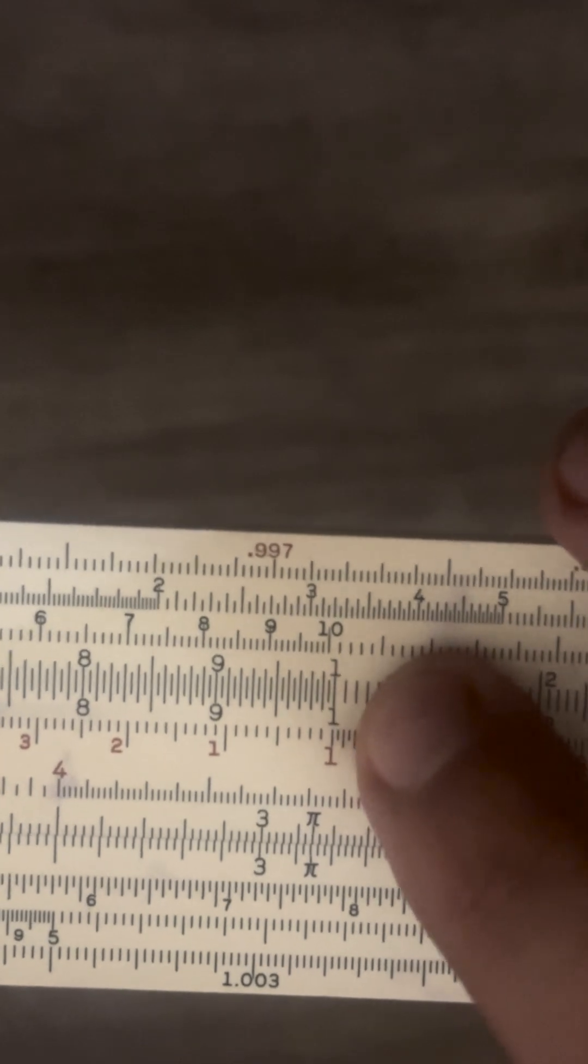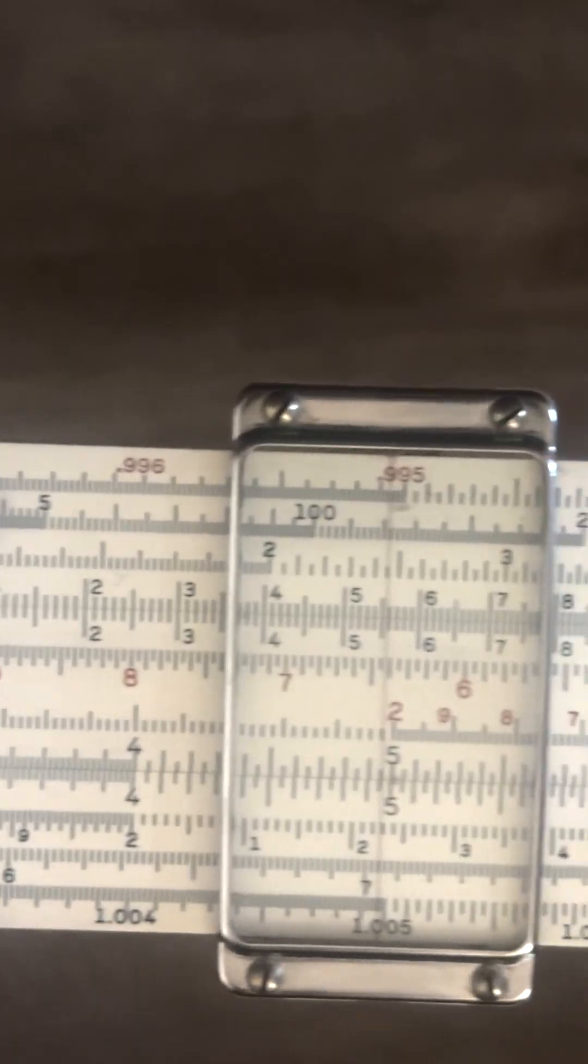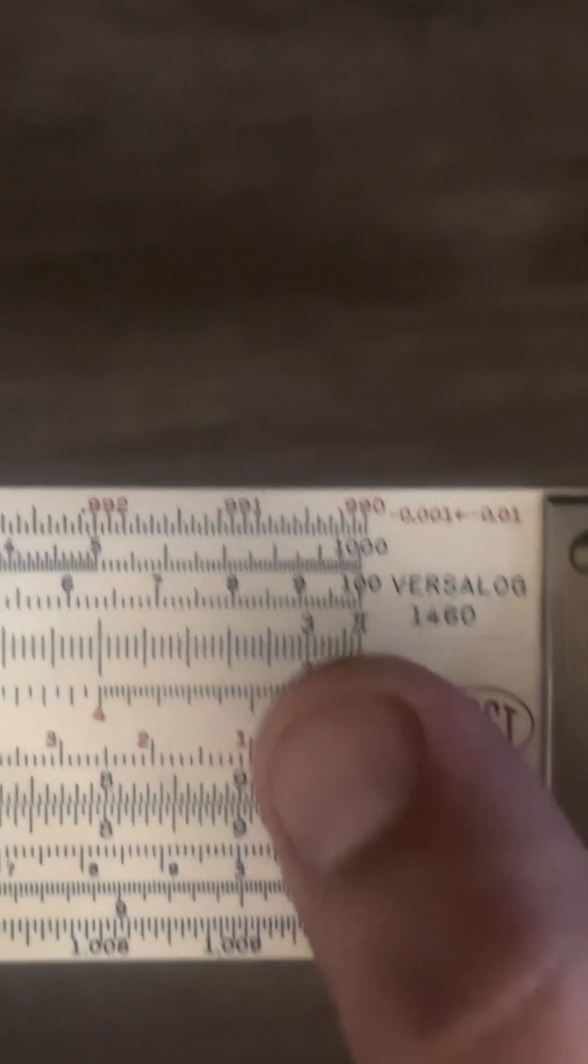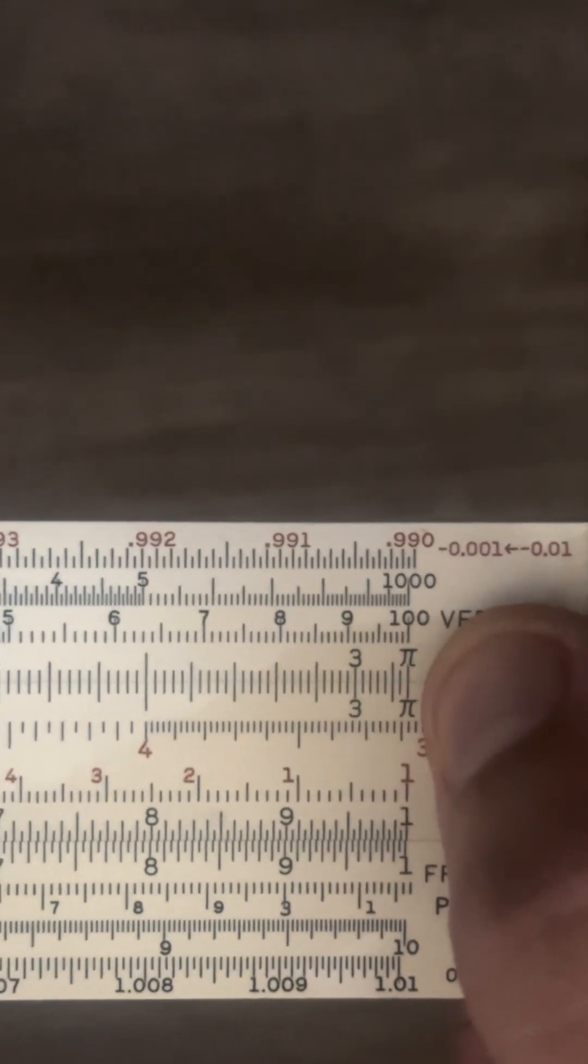And see that's kind of where the fold starts. That would be our right index normally but it's in the middle of the slide. So if we keep going that looks like the beginning of the C and D scales and it goes all the way back over to pi on the right index.